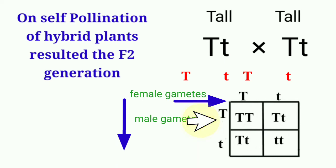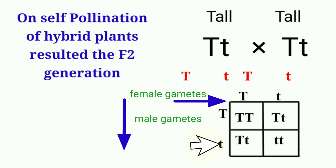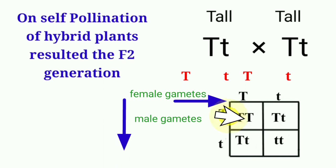During self-pollination and self-fertilization, four combinations are possible: a male gamete carrying T fuses with a female gamete carrying T; a male gamete carrying T fuses with a female gamete carrying t; a male gamete carrying t fuses with a female gamete carrying T; or a male gamete carrying t fuses with a female gamete carrying t.